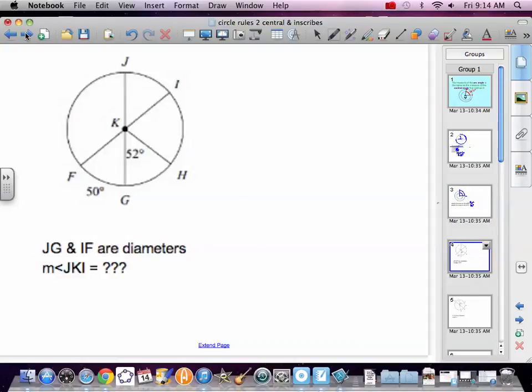JG and IF are diameters. Diameters again are half a circle. So that's 180 between those two. Measure of angle JKI. That's that. Well, what do we know? Well, we know that if this arc here is 50, then this little angle in here is 50. And we know that this is 52 right here. The inside, the outside are the same.